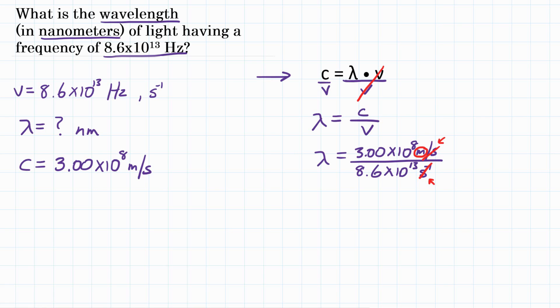So now we can plug this in our calculator. You are going to do 3.00 times 10 to the 8th, divide by everything on bottom in the denominator. And we need to make sure that this stays together because it is in scientific notation. So one way to do that is open parenthesis, and then put 8.6 times 10 to the 13th. Close parenthesis, hit equals,